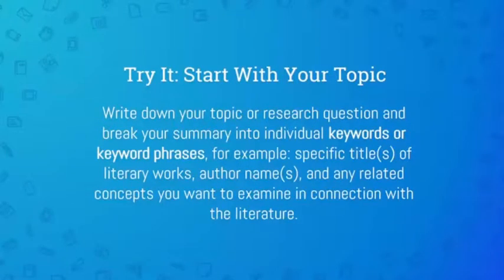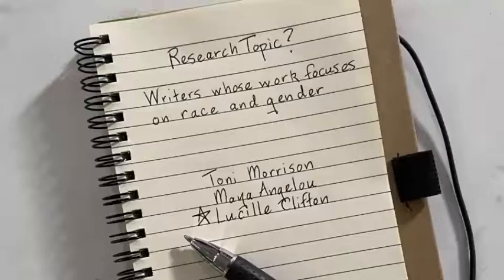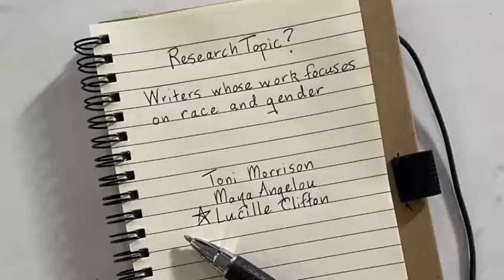What do I mean by a keyword? A keyword is a special term that is going to unlock relevant results on a topic. For example, if I'm interested in writers whose work focuses on race and gender, I'm going to want to zero in on the keywords in how I've just phrased that topic: writers whose work focuses on race and gender.